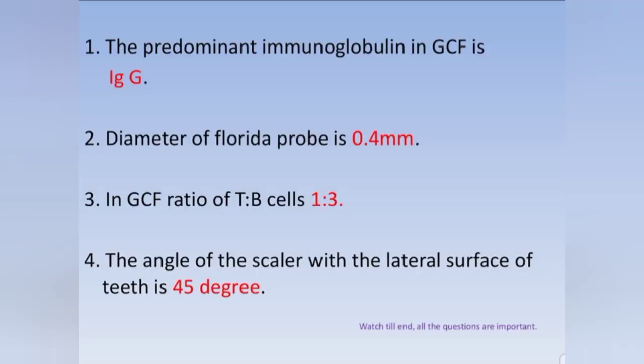The predominant immunoglobulin in GCF is IgG — in saliva and blood it's different, it's IgA. The diameter of the Florida probe is 0.4 millimeter. In GCF, the ratio of T to B cells is 1:3.